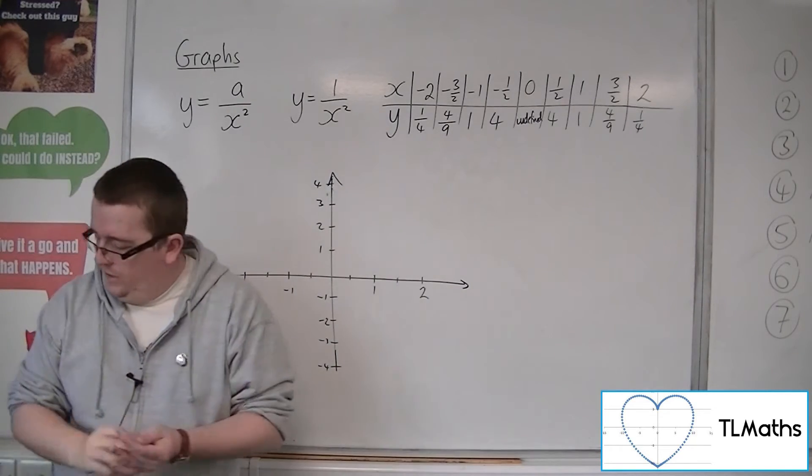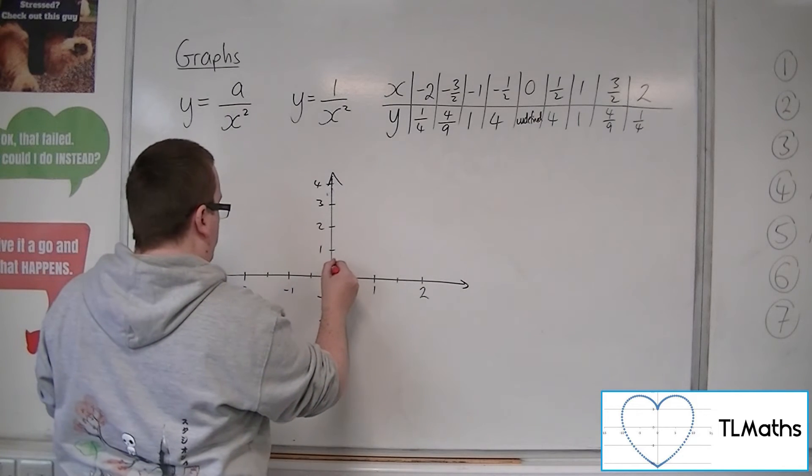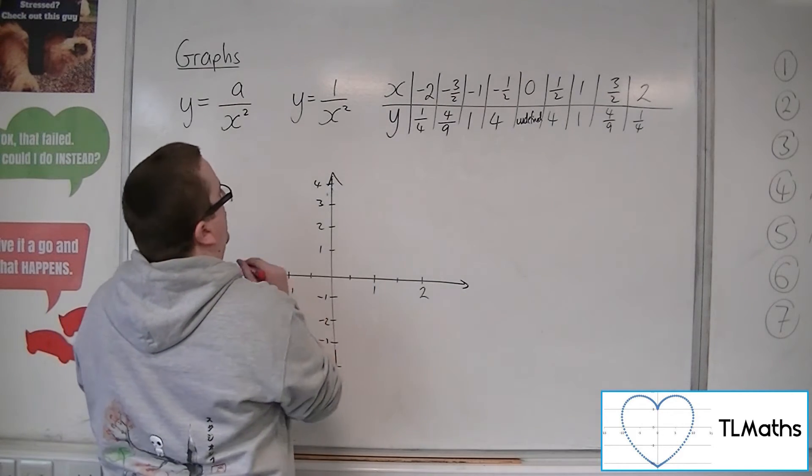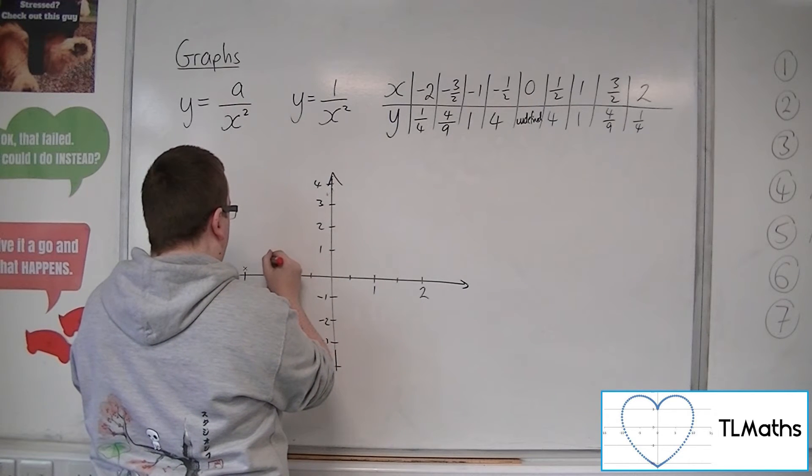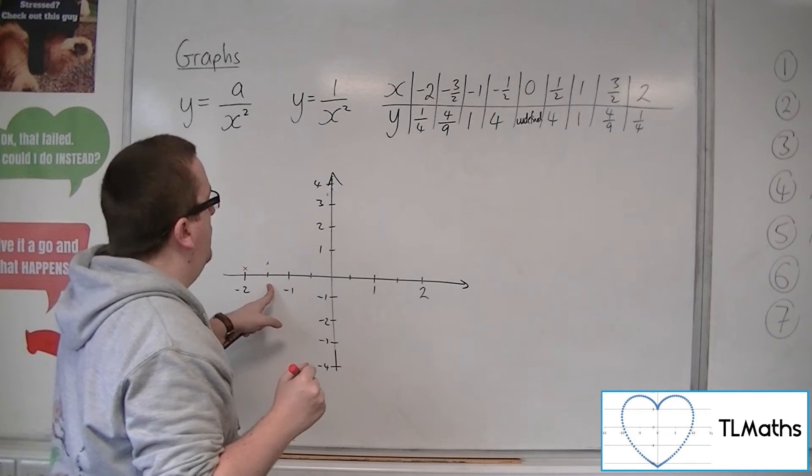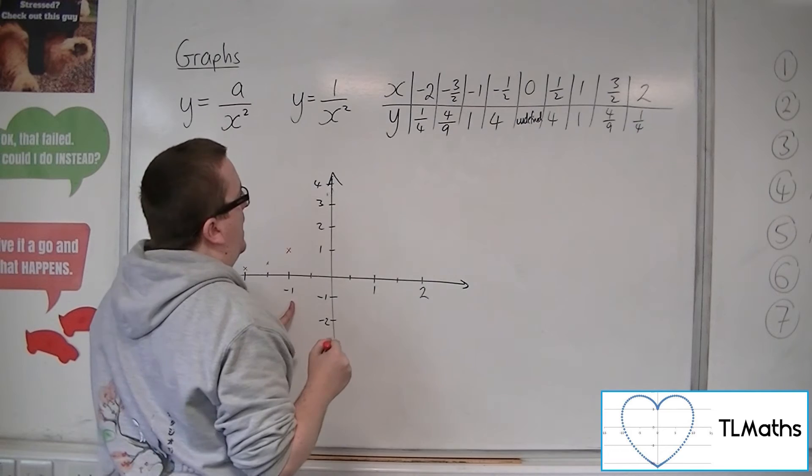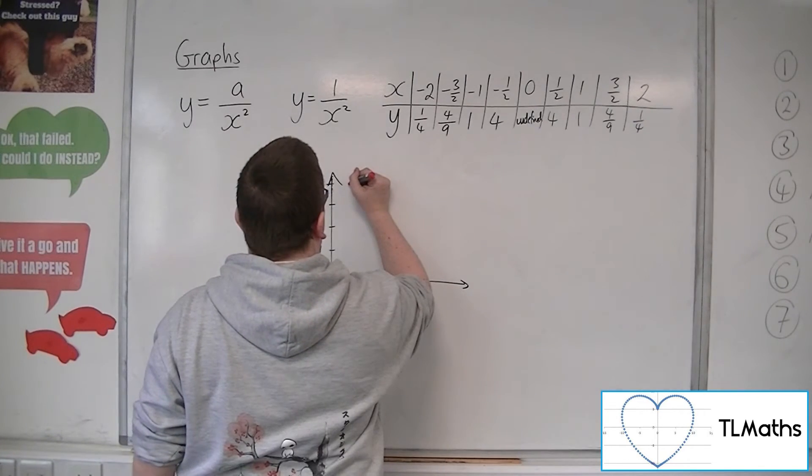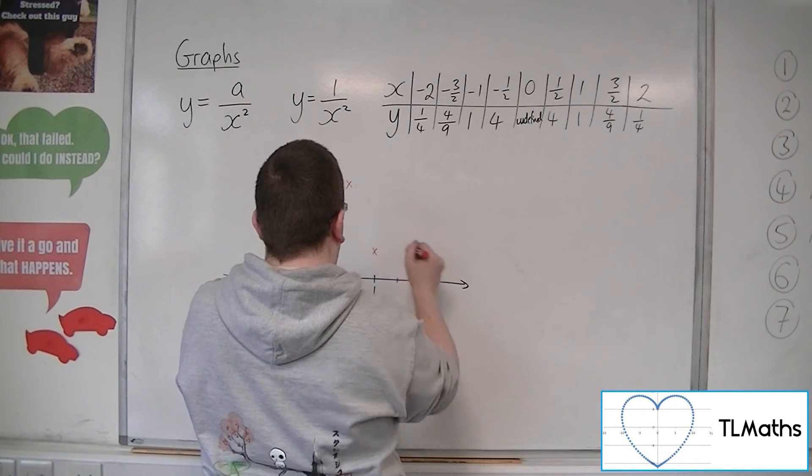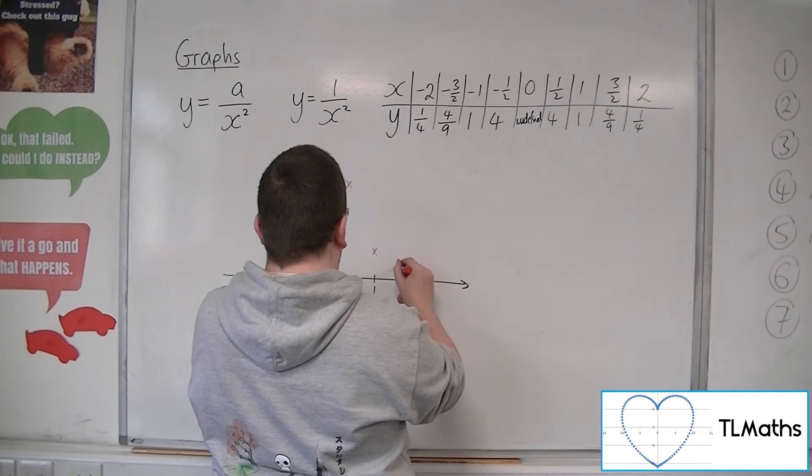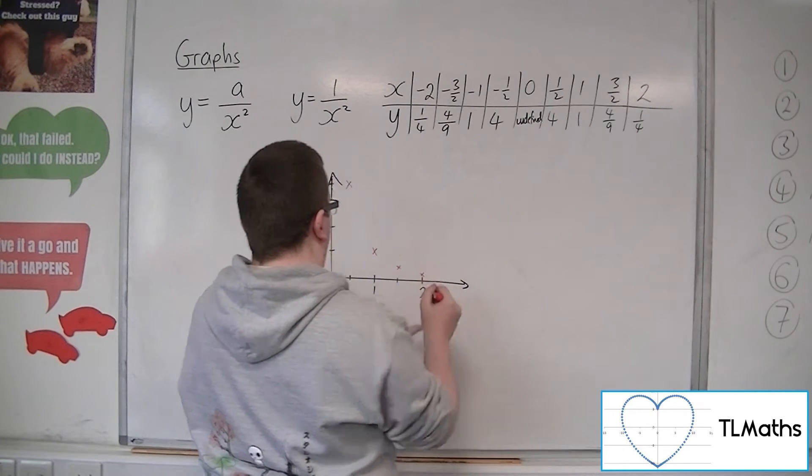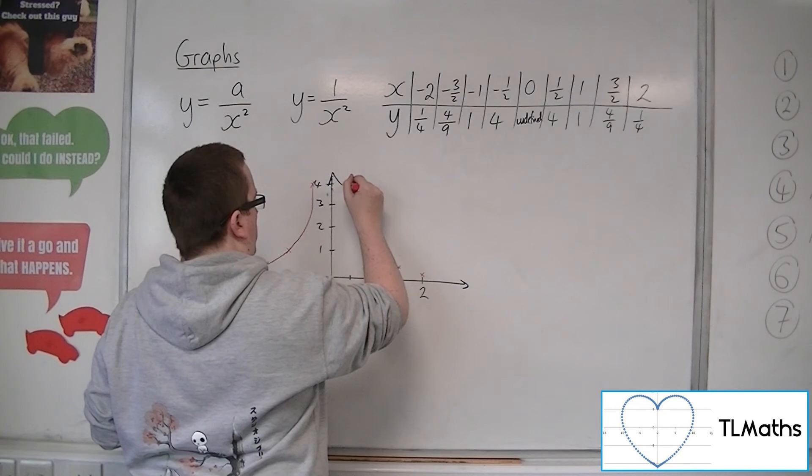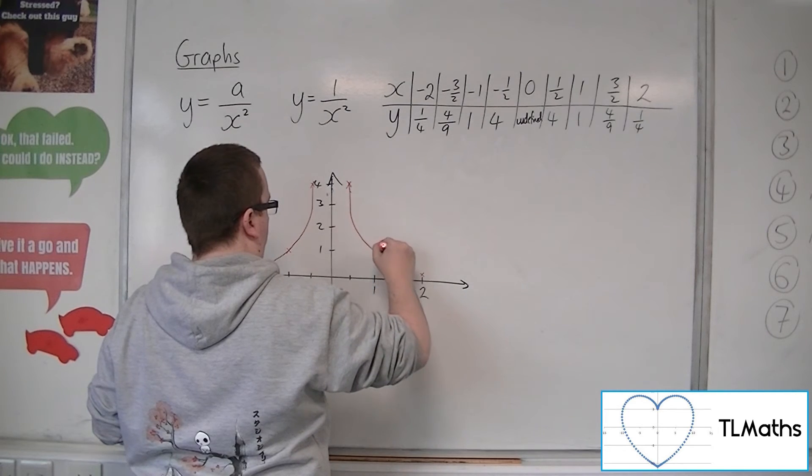Now plotting the points: (-2, 1/4), then (-3/2, 4/9) which is just shy of halfway, then (-1, 1), then (-1/2, 4). On the right side we have a similar picture: (1/2, 4), (1, 1), (3/2, 4/9), and (2, 1/4). The curve looks like this.